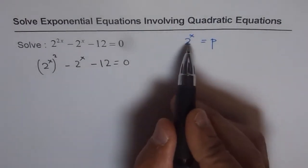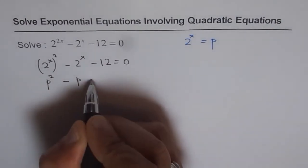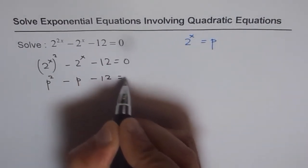If I substitute p for 2 to the power of x, I get p square minus p minus 12 equals 0.